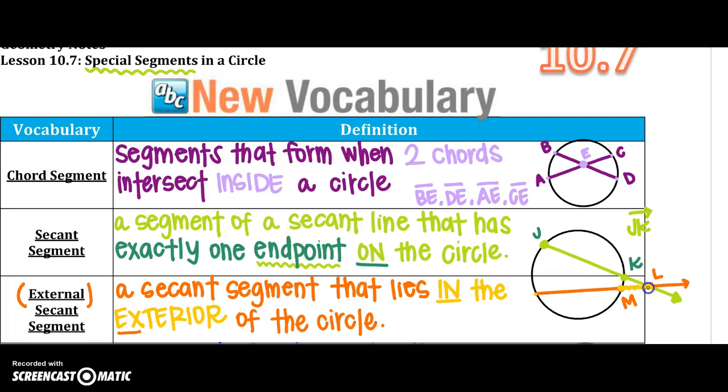L, I could say that's a ray, or just a segment. So KL and ML would be my secant external segments.